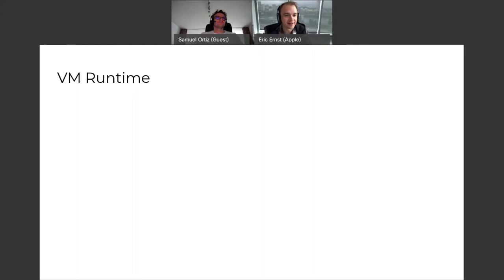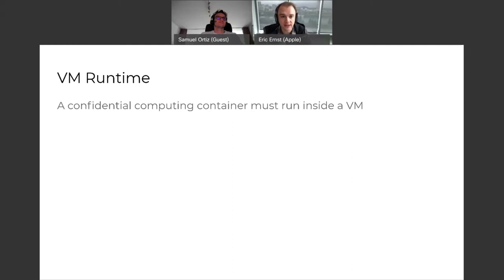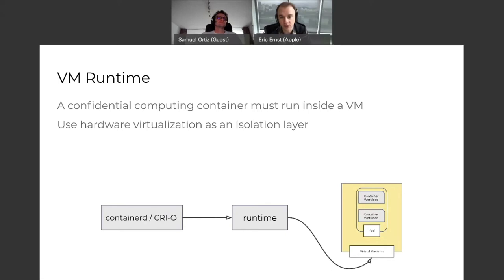As Samuel pointed out, one of the things that makes sense is Kata containers. The requirement is clear: you need to have a virtual machine in order to leverage these extensions. There are a few different sandbox runtimes — GVisor, Firecracker, and Kata containers. GVisor wasn't seen as a perfect match since it utilizes a user-space kernel and doesn't boot a full virtual machine.